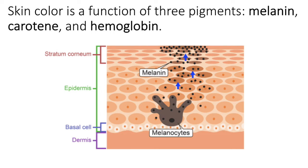The other two pigments are carotene and hemoglobin. Carotene — not carotin, but carotene, like carrot — is an orangey-yellow pigment that we obtain through eating fruits and vegetables that have those colors. That yellow-to-orange color would reside in the stratum corneum, giving individuals a somewhat yellow to orange appearance.